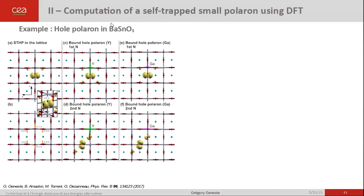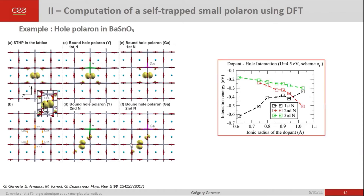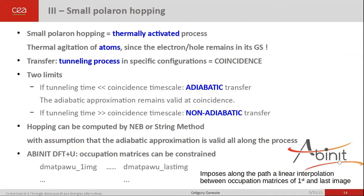Here is one example: a study of oxygen-type hole polarons in barium stannate. These hole polarons appear under acceptor doping — here the replacement of one tin by an atom of lower valence, such as yttrium or gallium. Using the procedure explained above, it is possible to simulate a small polaron at different distances from the dopant: as a first neighbor of the dopant and as a second neighbor. Thus, one can compute the dopant–hole interaction energy as a function of the ionic radius of the dopant. For small dopants such as gallium, the hole polaron is most stable as the first neighbor of the dopant, but for larger ones such as lanthanum, it is more stable as a second neighbor. So the interaction between the negatively charged dopant and the positive hole is not only a question of electrostatics but also of elasticity.